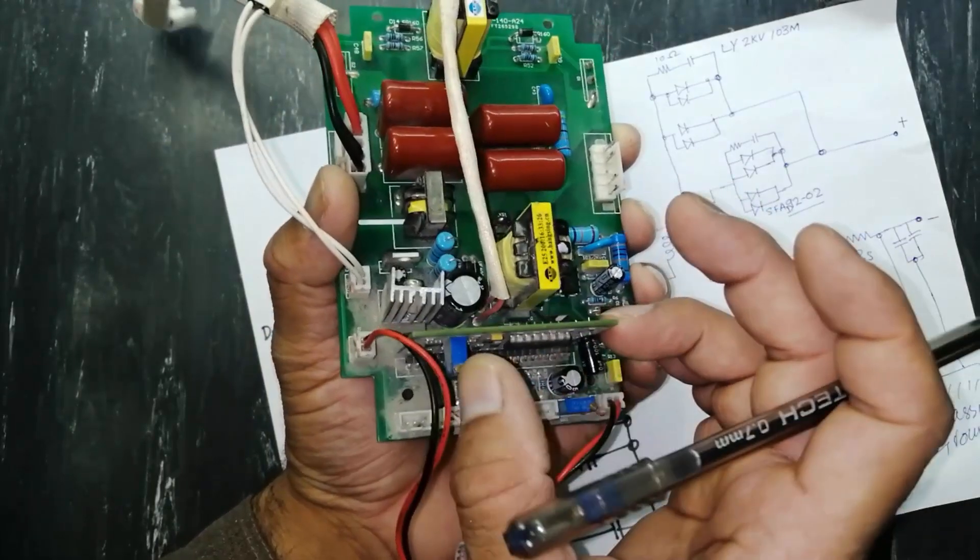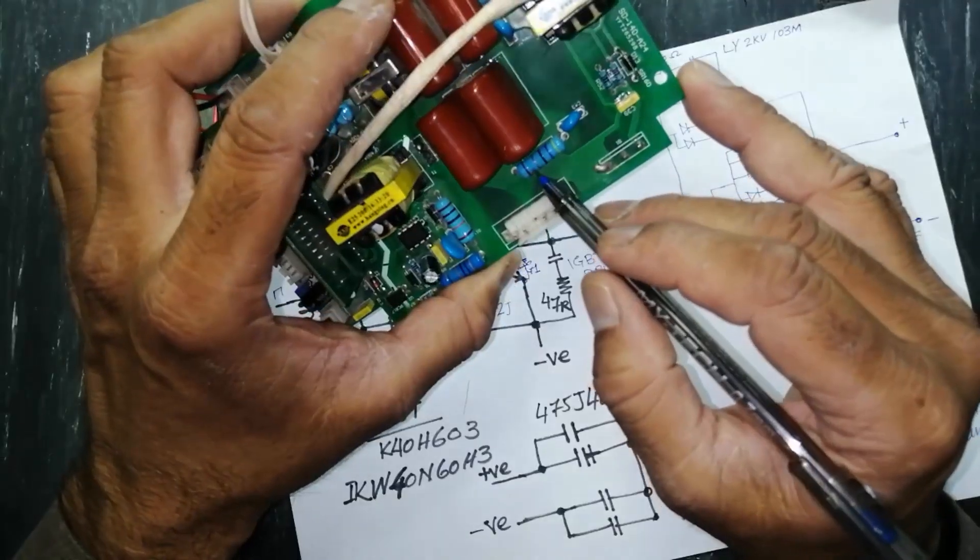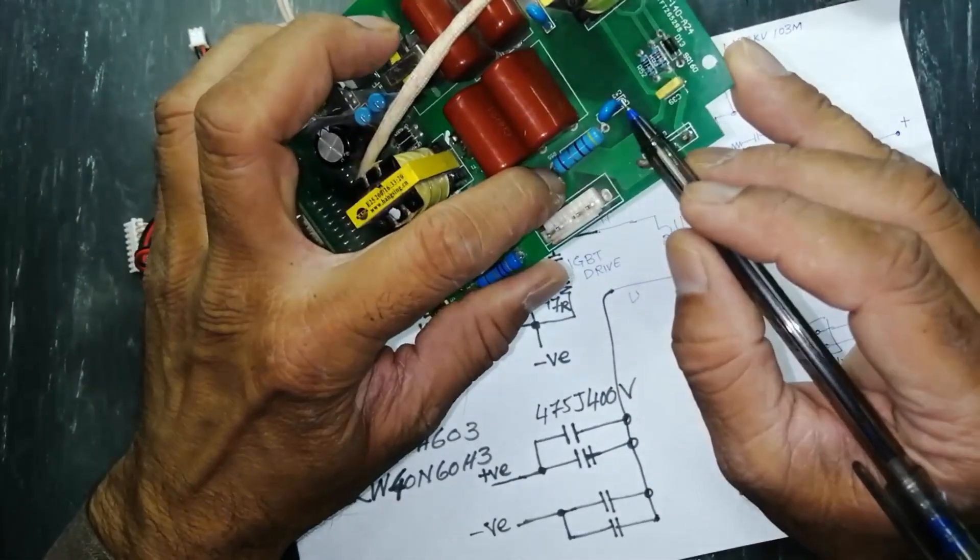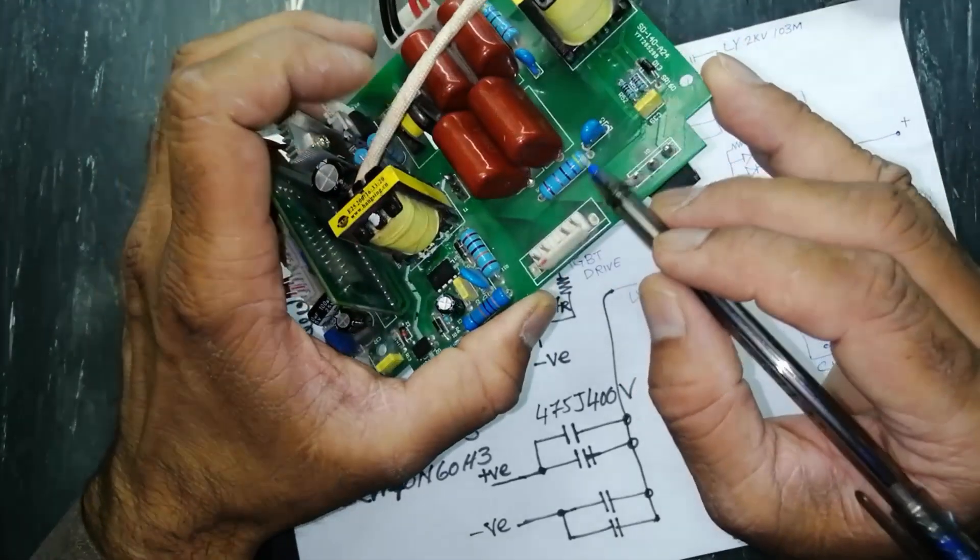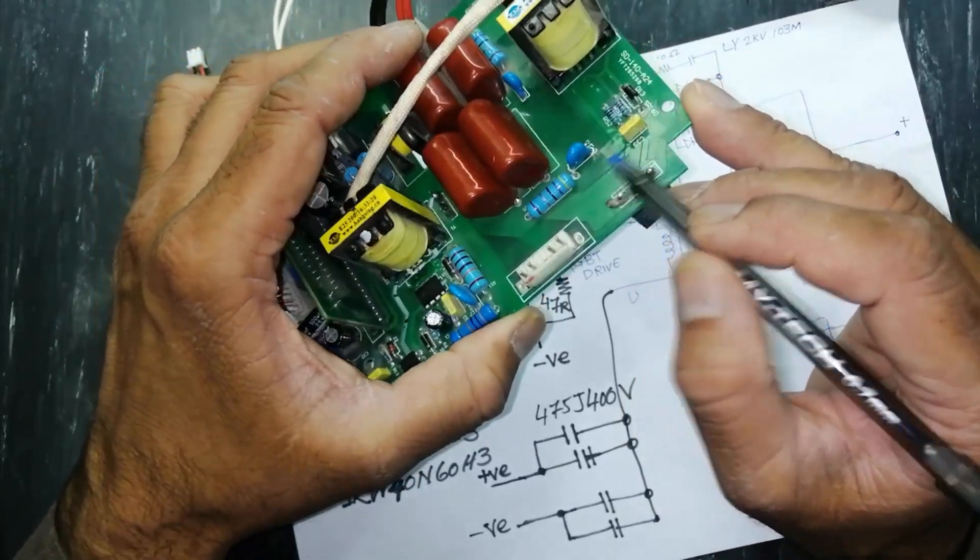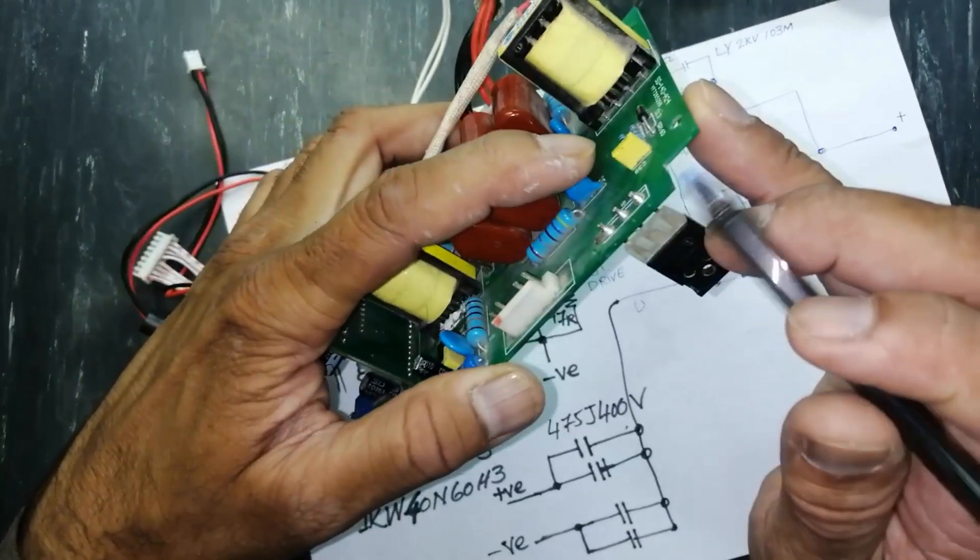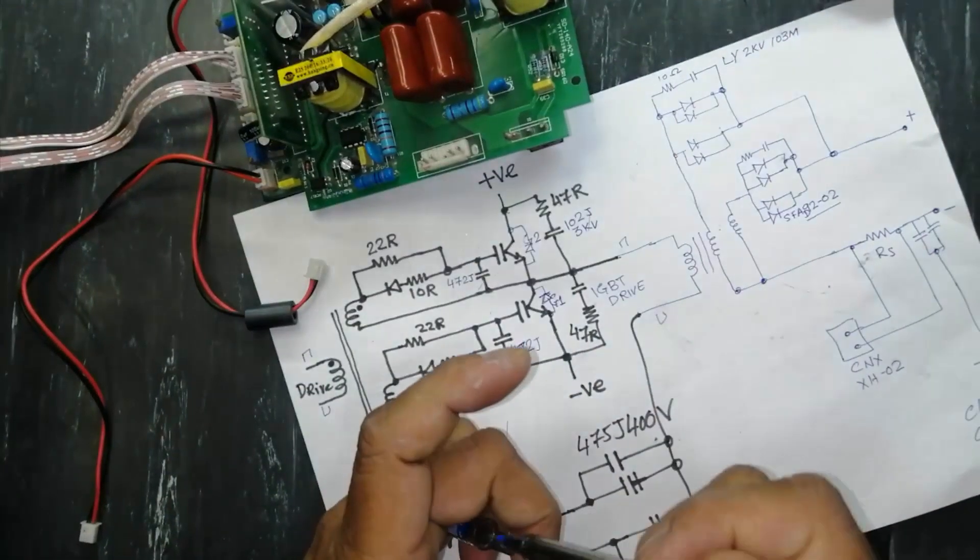Here we have emitter to collector one resistor and one capacitor, 47 ohm resistor and there is one capacitor 102J, 102J 3kV. These capacitors. I hope so friends this video is informative for you.